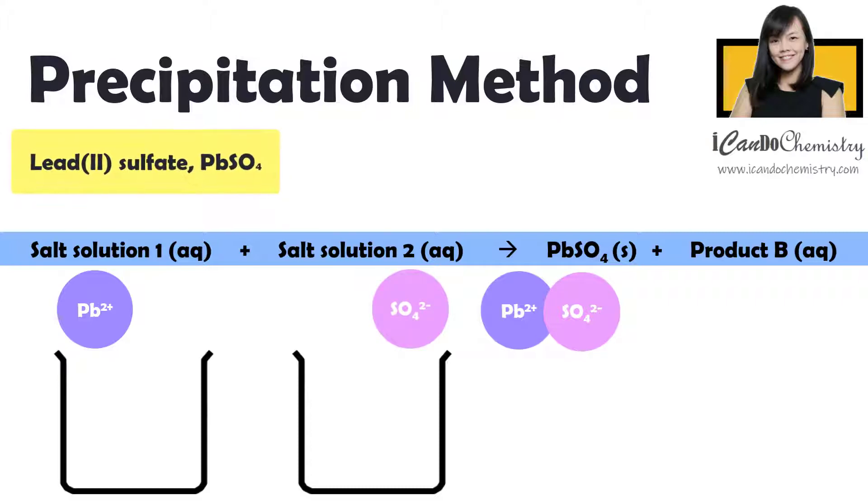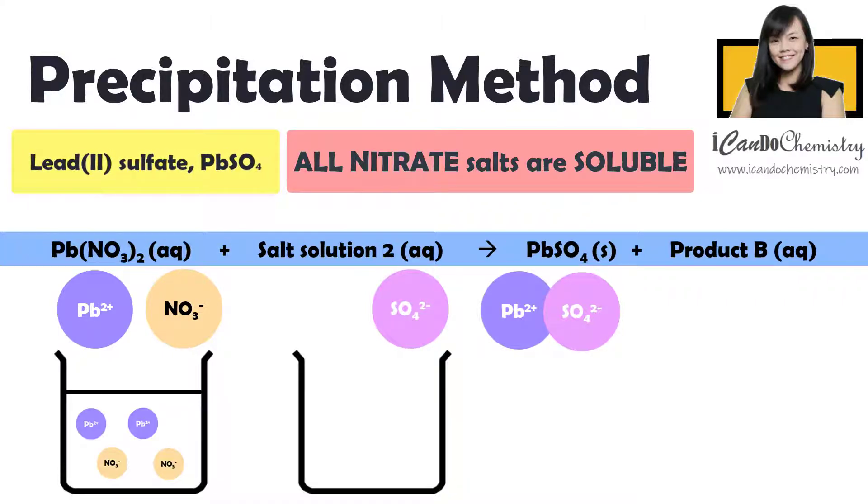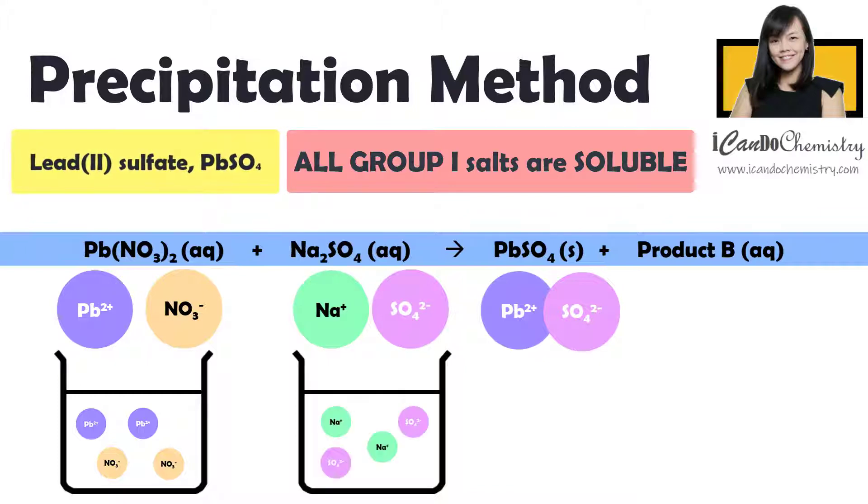Now based on solubility rules, we know that all nitrate salts are soluble. Hence we can safely pair lead(II) cation with nitrate. Now the first salt solution is lead(II) nitrate. Also, we know that all group 1 salts are soluble. Hence we can choose any group 1 cation with sulfate. Now let's choose sodium ion. Now the second salt solution will be sodium sulfate.